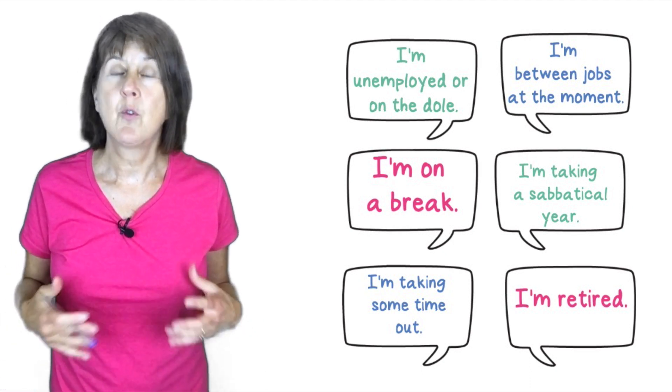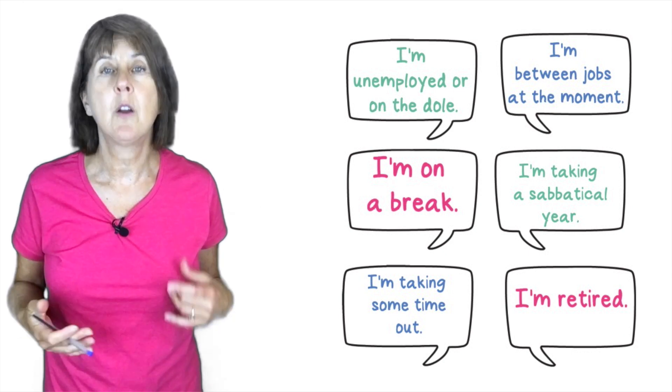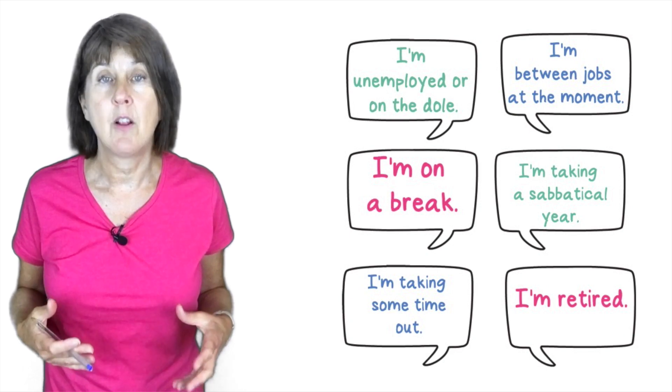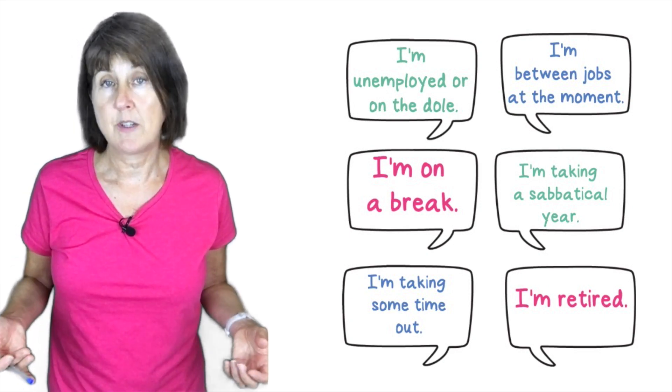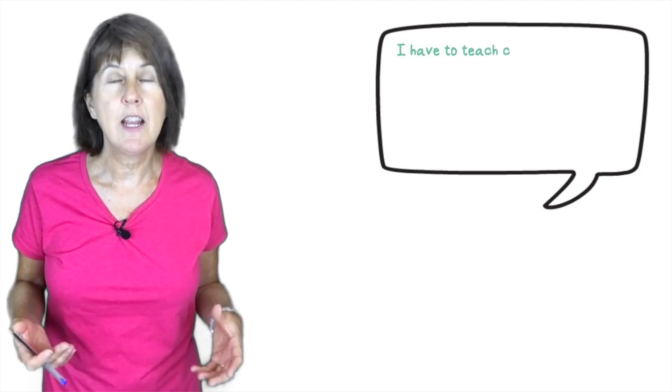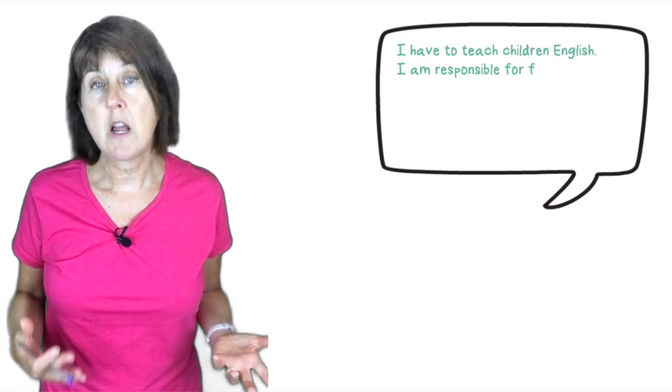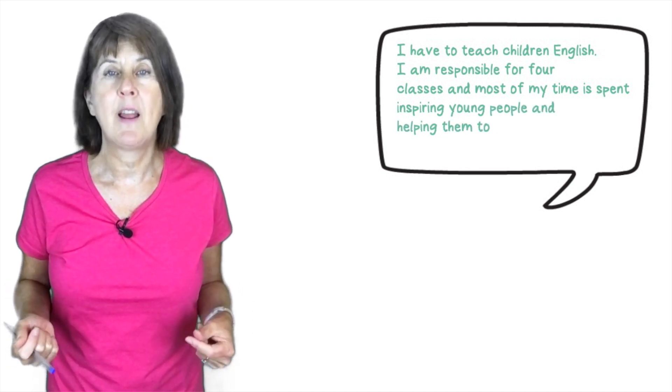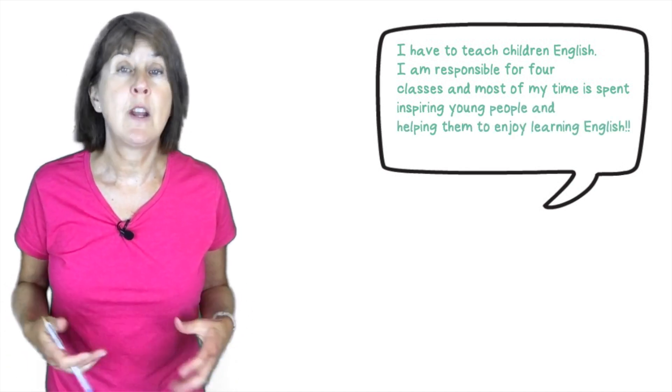Okay, so now we've talked about your company, where you work, what you do. Let's now look at how we can describe your job in more detail. What do you actually do all day? So for me, I would say I have to teach children English. I'm responsible for four classes and most of my time is spent inspiring young people and helping them to enjoy learning English.